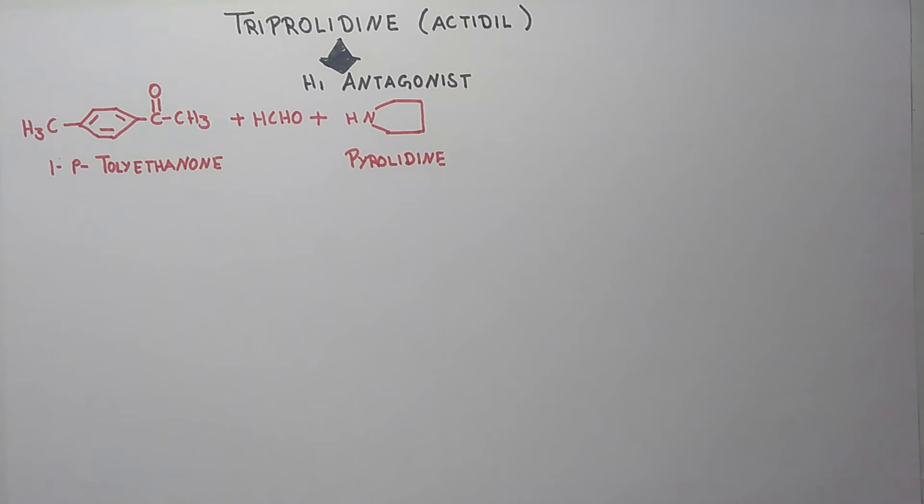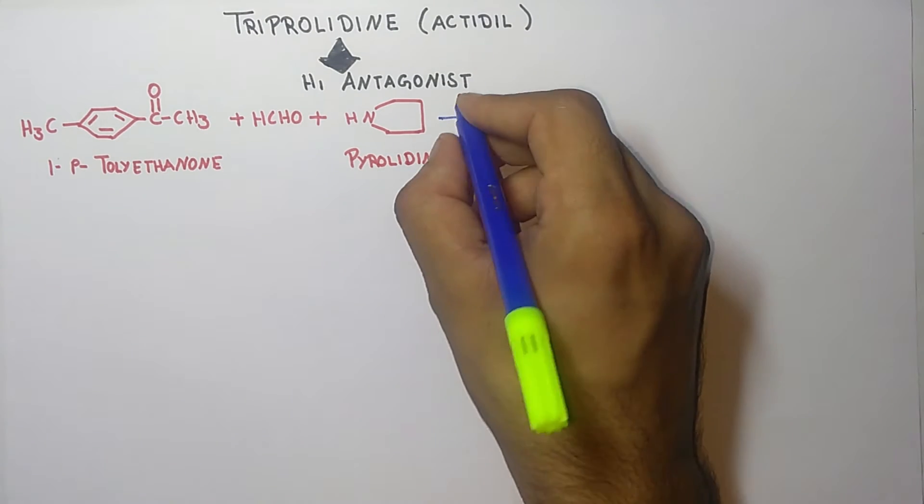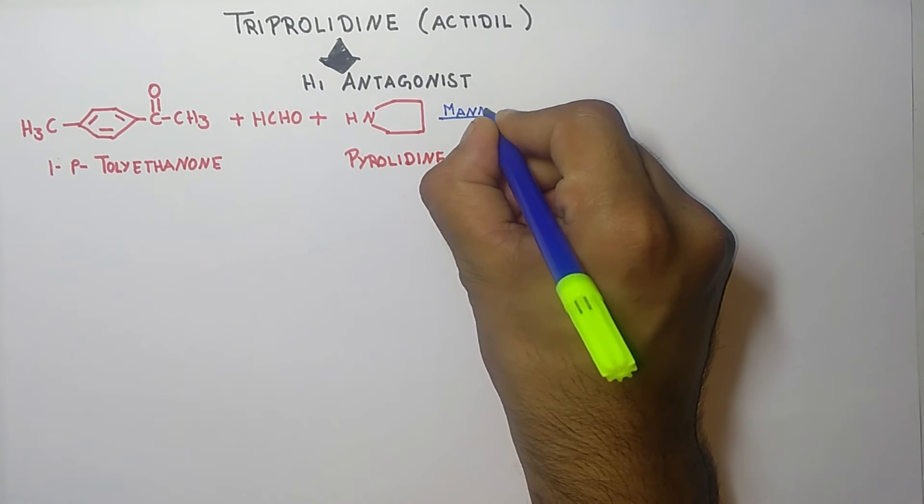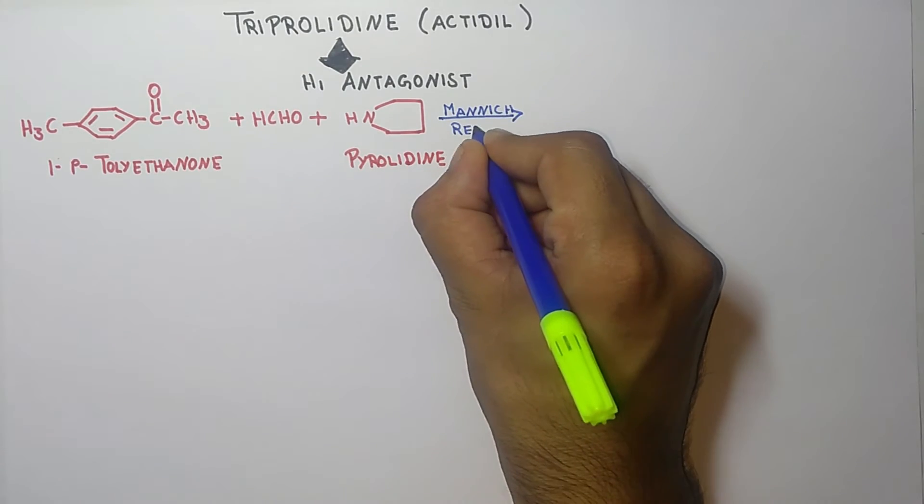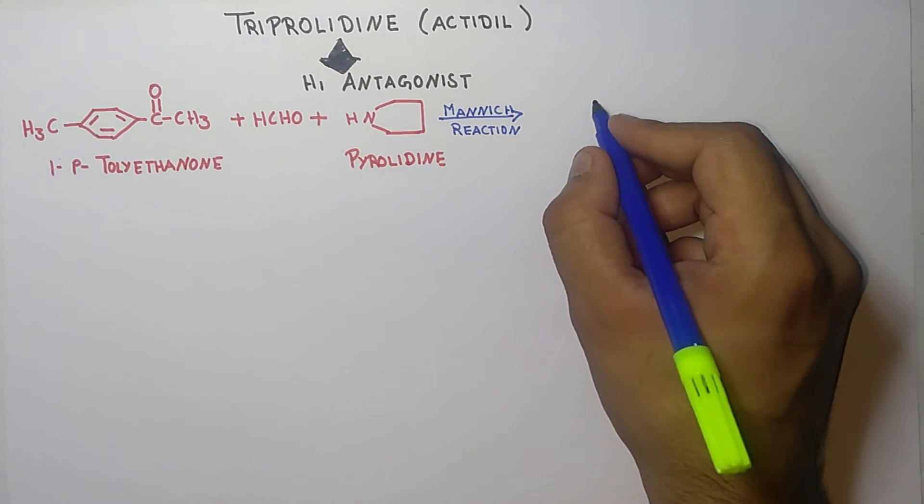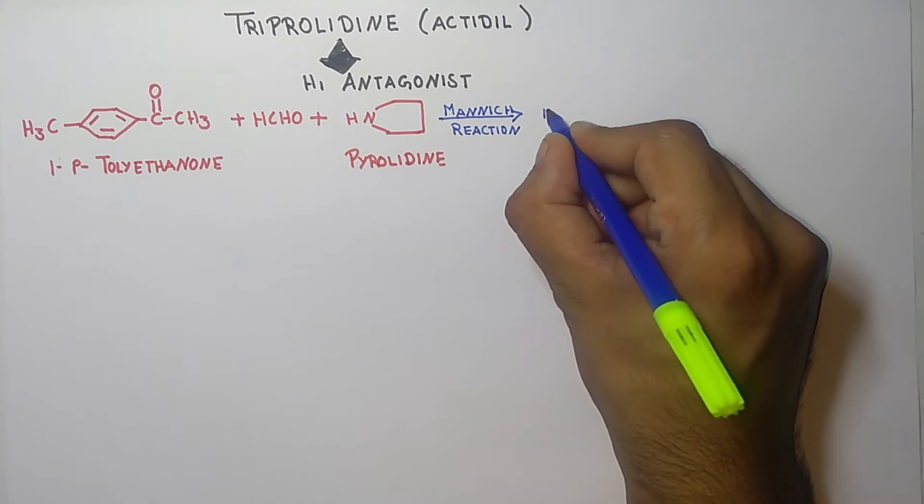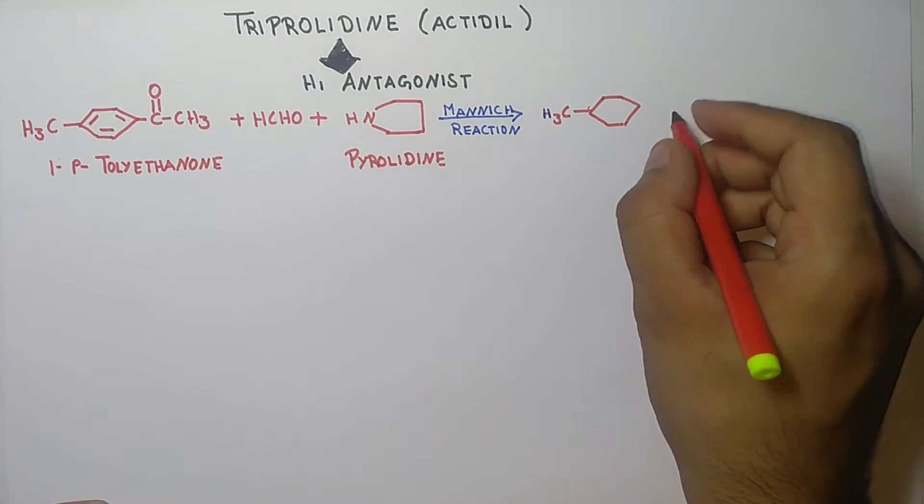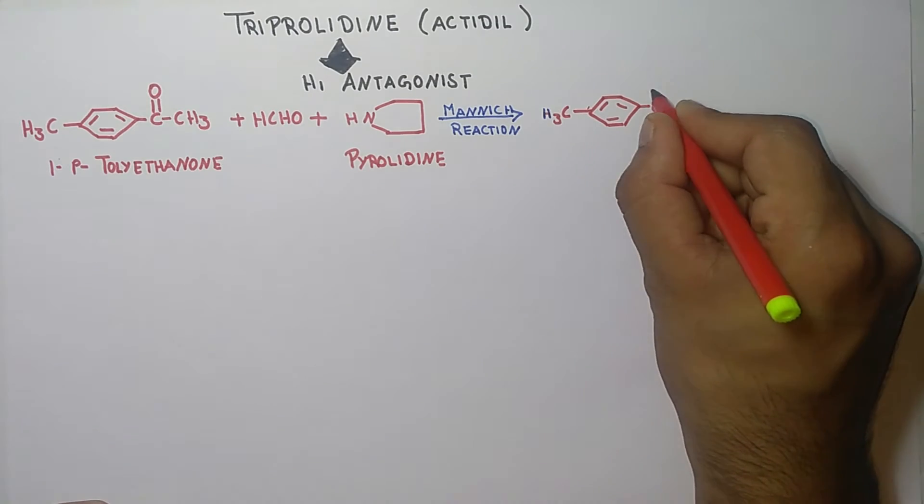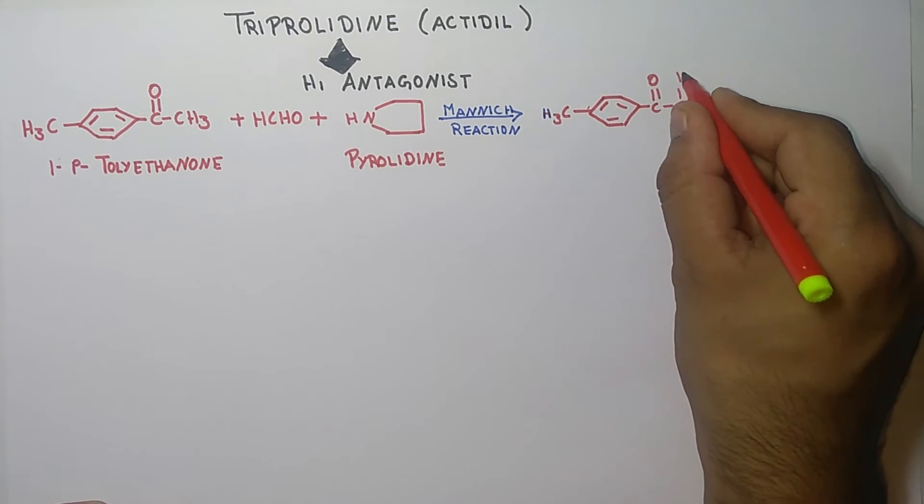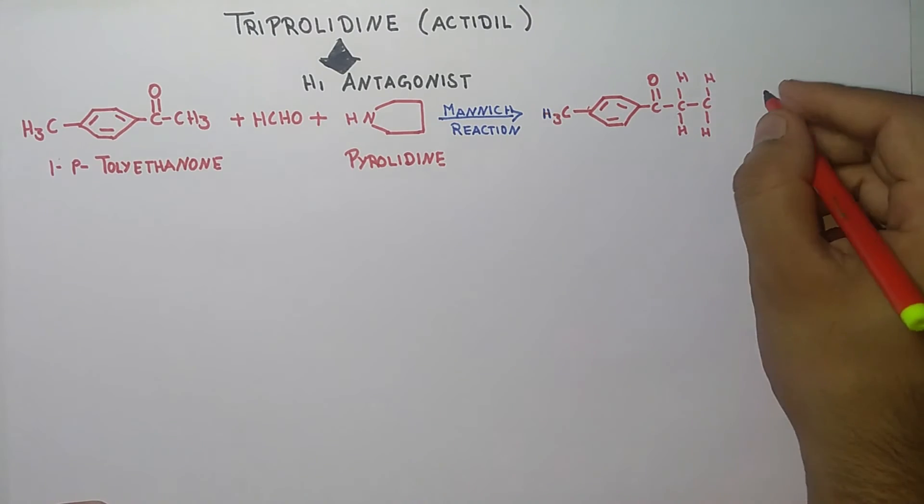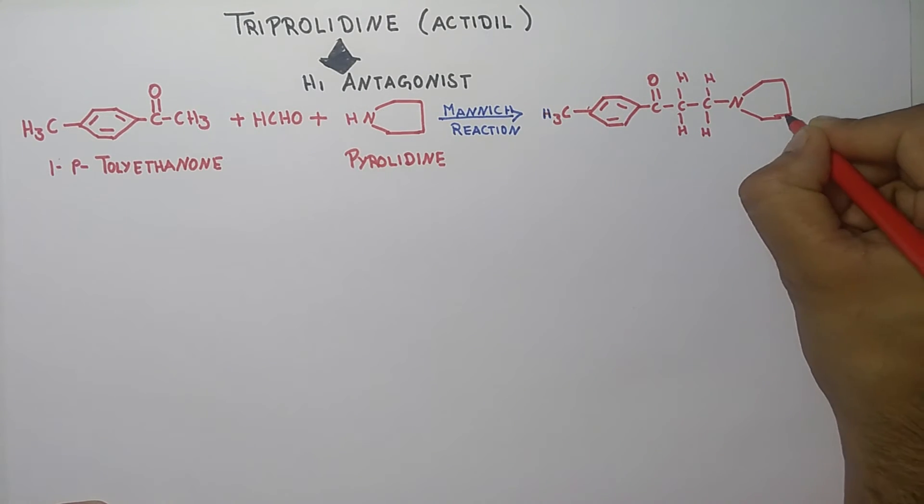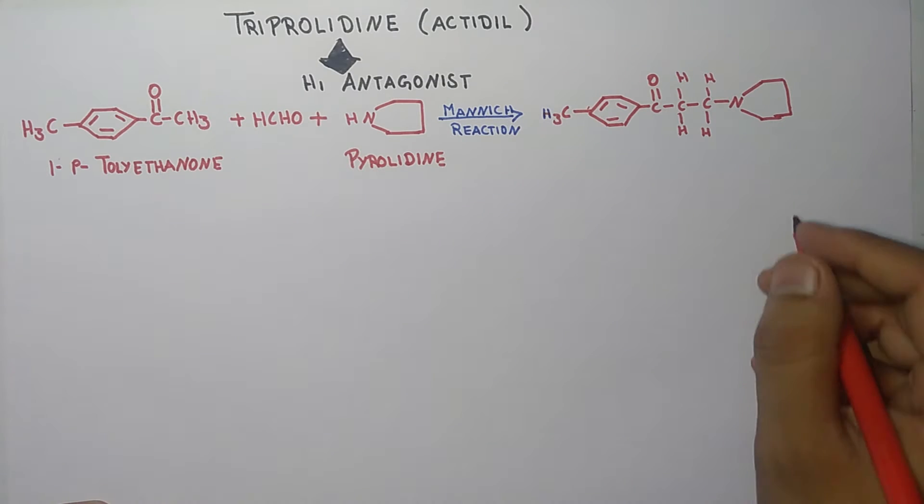So there will be a Mannich reaction that takes place, and the product will be the Michael addition product.